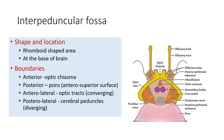Lateral to the optic chiasma — that is the anterior boundary — you will be seeing the olfactory tract, which I have mentioned, forming an olfactory trigone, and there is the anterior perforated substance. So these are the anterior, posterior, anterolateral, and posterolateral boundaries.